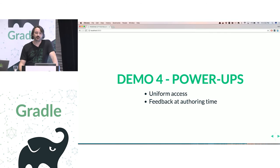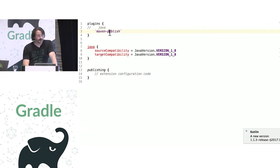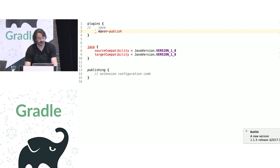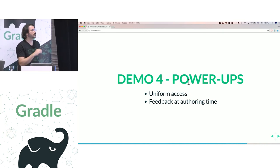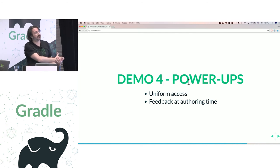Question from the audience: why use backtick syntax for applying the Maven Publish plugin? Because `maven-publish` is not a valid Kotlin identifier, so Kotlin uses backtick syntax that lets you use literal identifiers. Regarding automatic conversion of conventions into extensions and control over name mapping — no, you cannot remap. The plugin author has control over the internal name, and with the Kotlin DSL, that internal name becomes the exposed name. Plugin authors have control of convention names, but consumers cannot remap them.